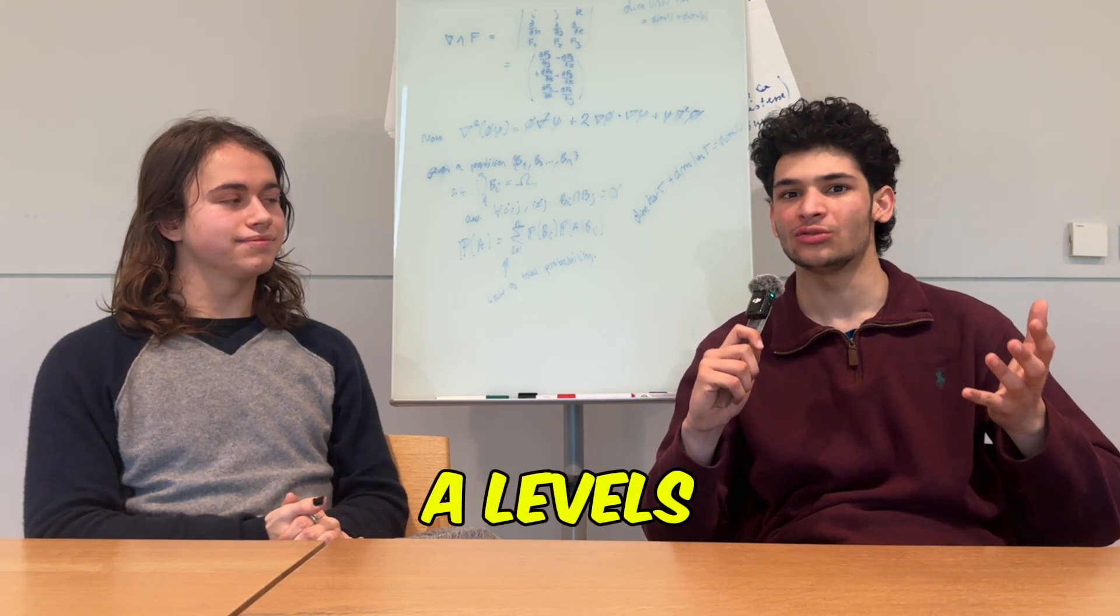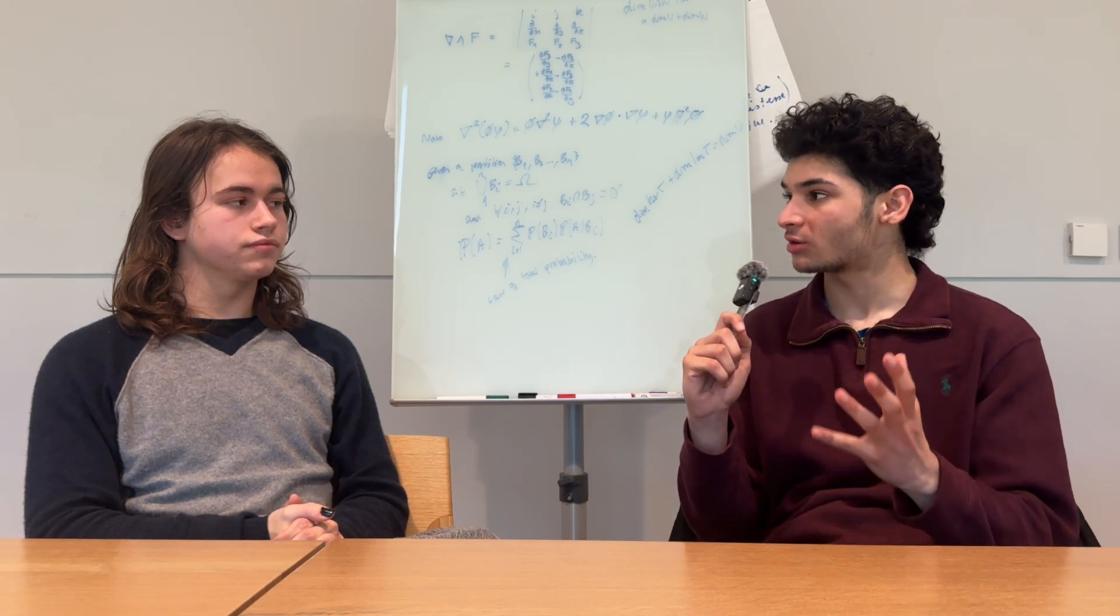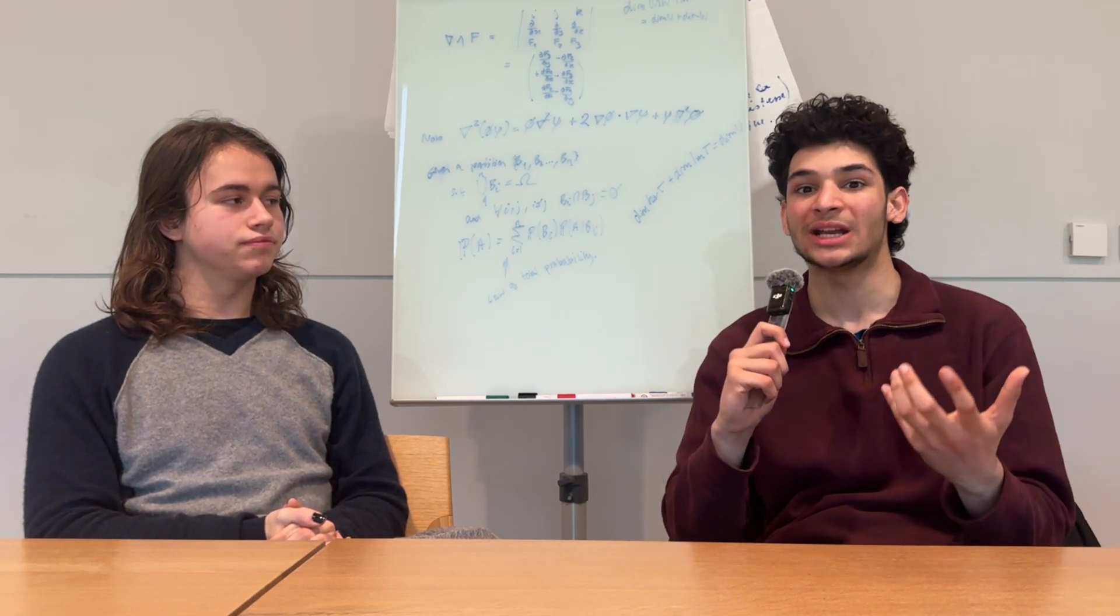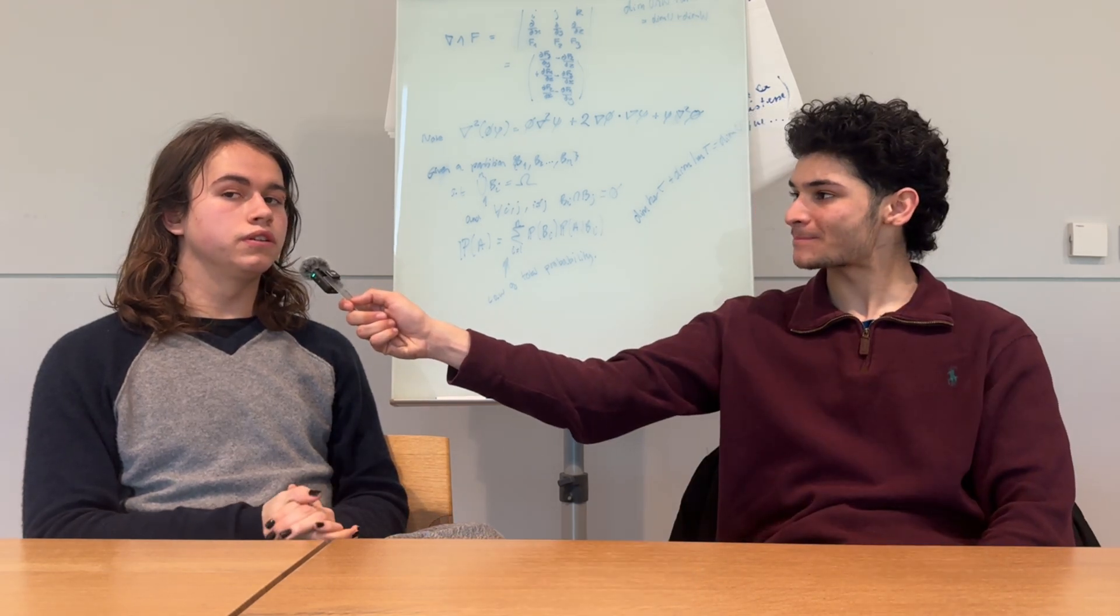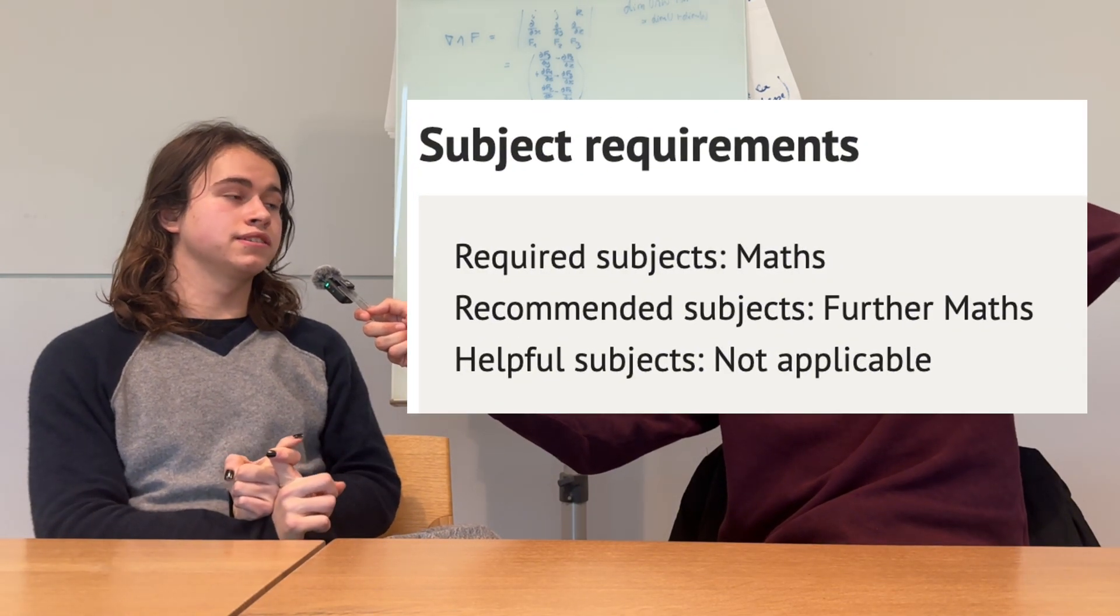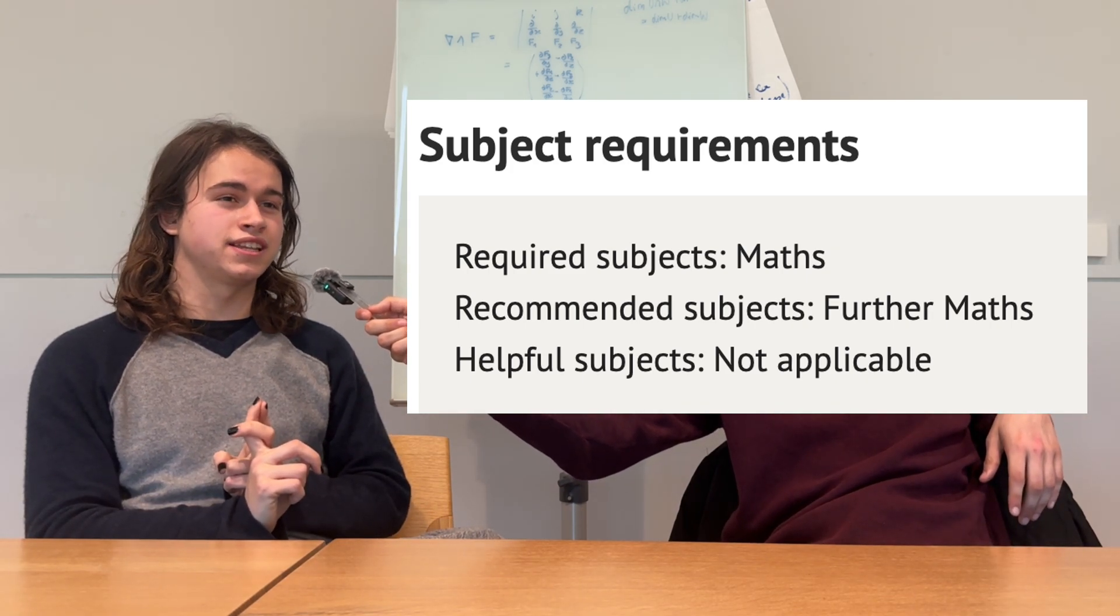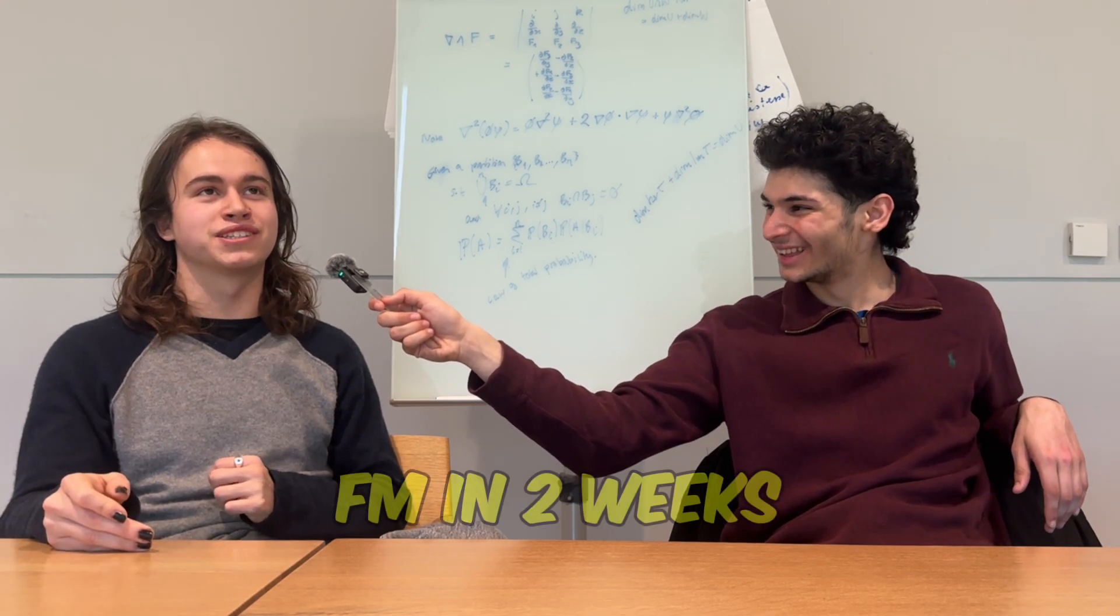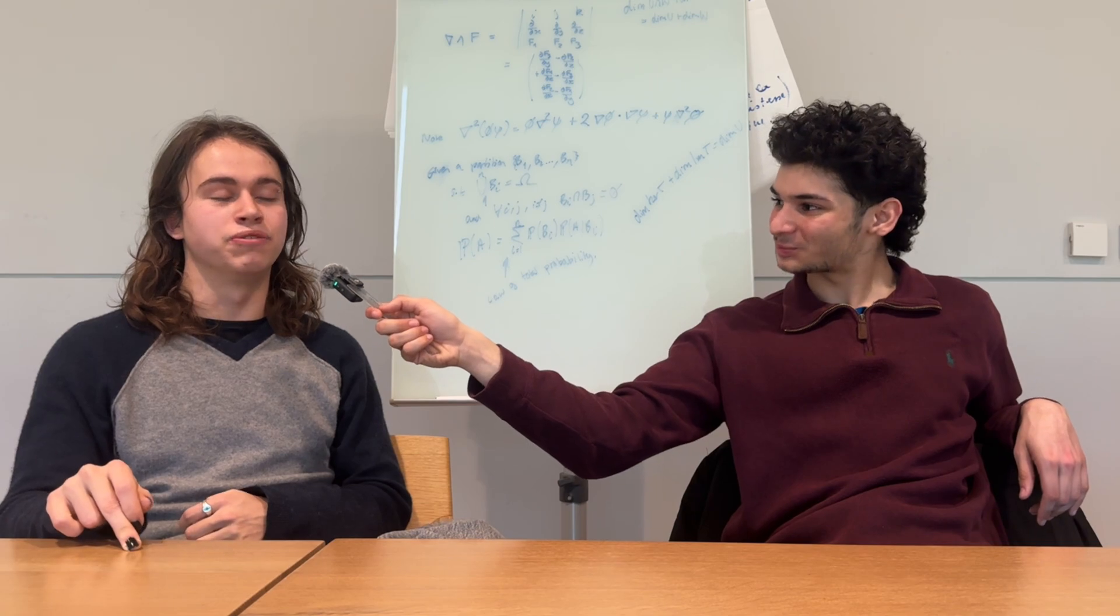So moving on now to A-levels. What A-levels are important? Which ones do you think complement maths? Obviously, you have to take maths. And what grades are you looking for? What are the entrance requirements for Oxford maths? On Oxford, if you go on the website looking at the maths thing, obviously, they require you to take maths for obvious reasons. For further maths, it says it's not necessary, but useful. Definitely take further maths. They basically teach the further maths curriculum in two weeks. I would not go into it without doing further maths.